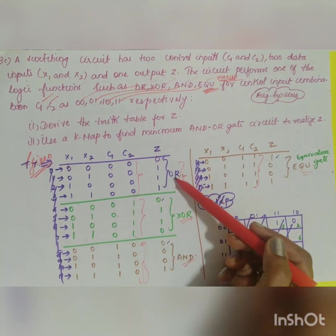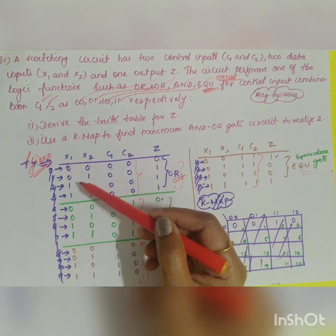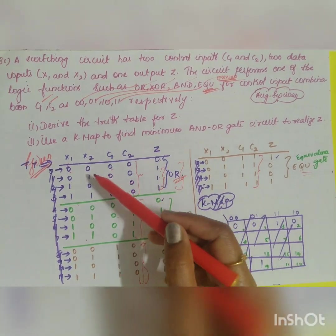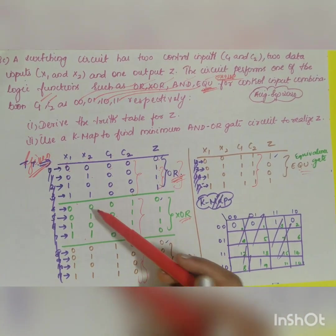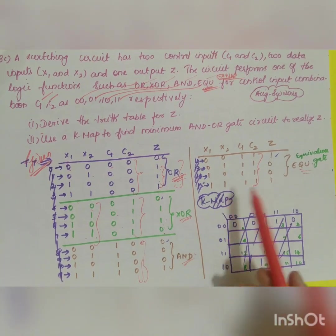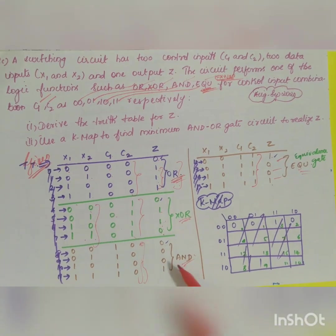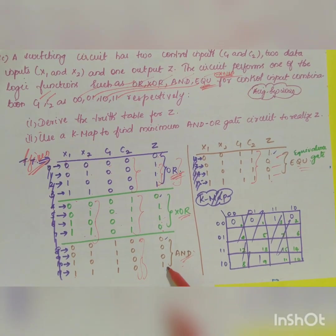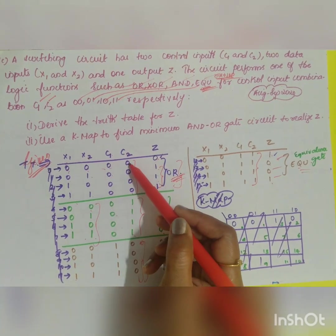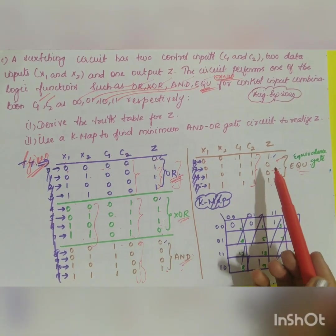The output z for the OR gate: if any input is high, the output is 1, giving 0, 1, 1, 1. For XOR: 0, 1, 1, 0. For XNOR (opposite of XOR): 1, 0, 0, 1. For AND: output is 1 only when both inputs are high, giving 0, 0, 0, 1. From this you can form your truth table rows.